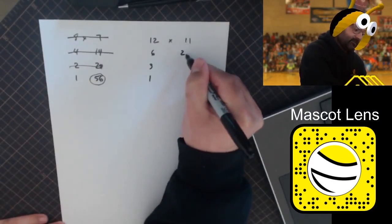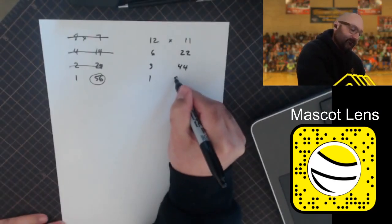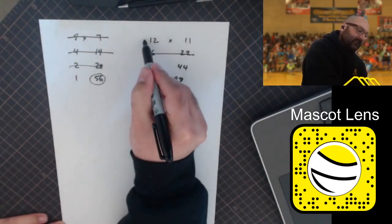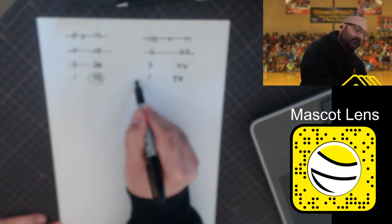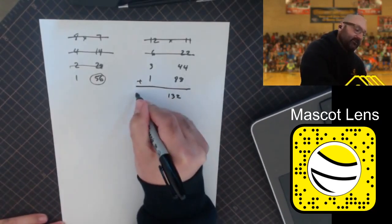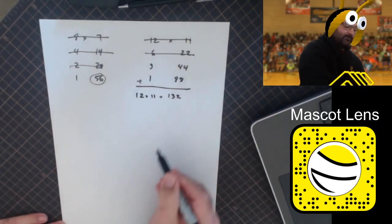And then 11 plus 11 is 22, 22 plus 22 is 44, 44 plus 44 is 88. Strike out any even-numbered rows. This has two numbers to add, which add up to 132, so 12 times 11 is 132.